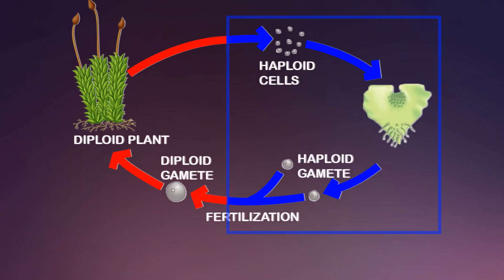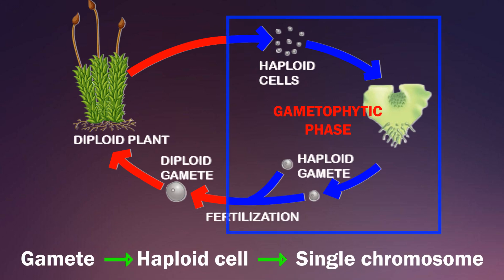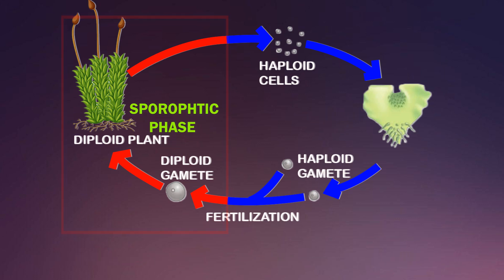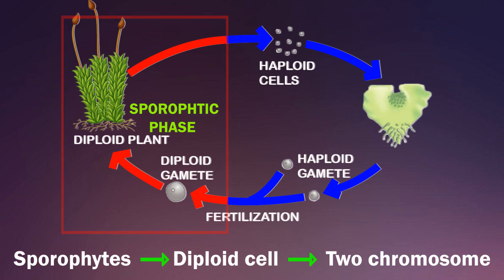In the gametophytic phase, gametes are produced. It is also called the haploid stage, as a gamete is a haploid cell, meaning it has a single chromosome. In the sporophytic phase, spores are produced. Sporophytes are diploid, as their cells have two chromosomes.